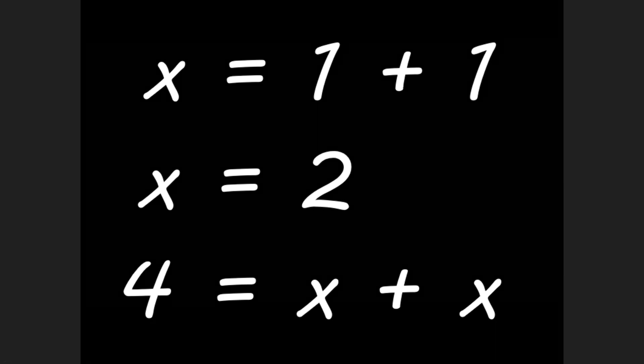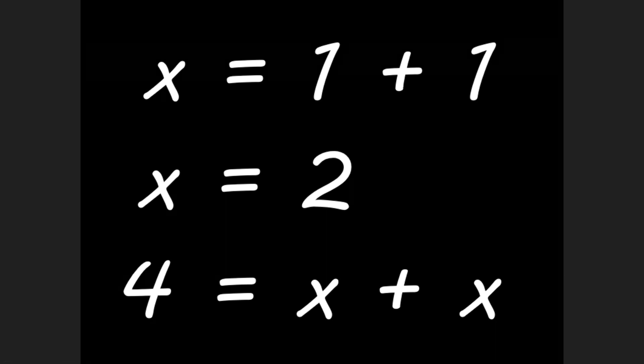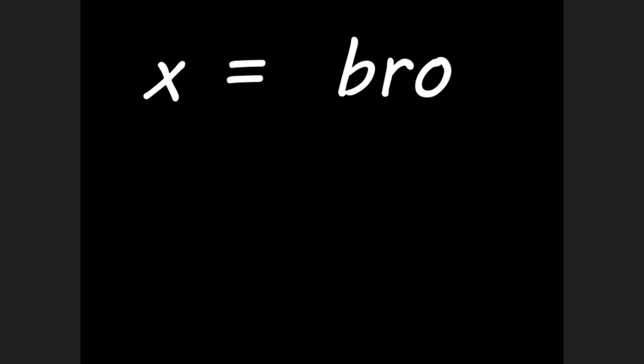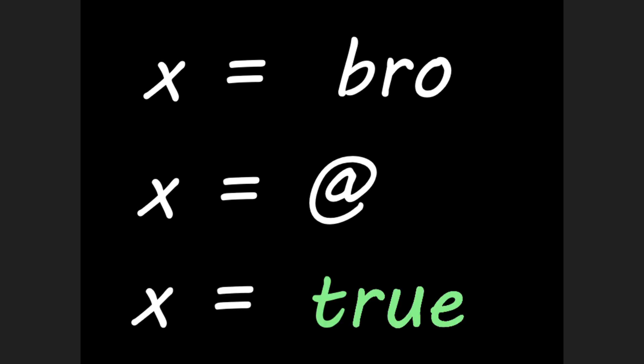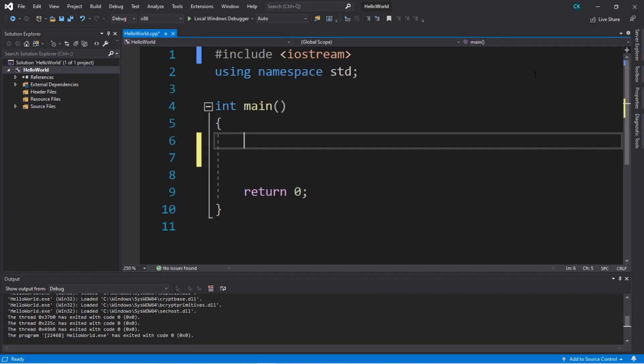We can reuse those variables elsewhere in our C++ programs. However, we are not limited to only assigning numbers to variables. We can also assign words, single characters, or even boolean values which hold either true or false. We can even assign entire sentences to a variable.